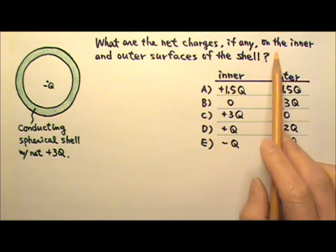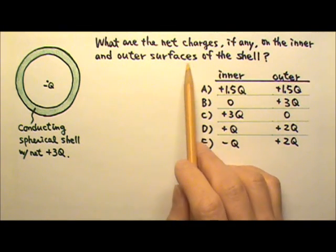What are the net charges, if any, on the inner and outer surfaces of the shell?